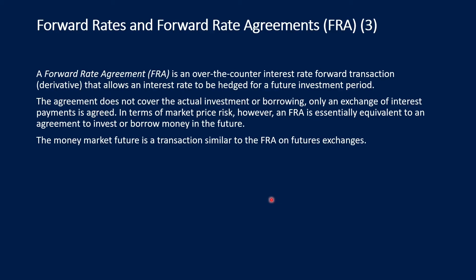What is a forward rate agreement? A forward rate agreement is an over-the-counter interest rate forward transaction, which is a derivative, and that allows an interest rate to be hedged for a future investment period. Over-the-counter means not stock-listed, but a one-to-one agreement — not traded on an exchange. The agreement does not cover the actual investment or borrowing; only an exchange of interest payments is agreed. In terms of market price, a forward rate agreement is essentially equivalent to an agreement to invest or borrow money in the future. The money market future is a transaction similar to the forward rate agreement on futures exchanges.